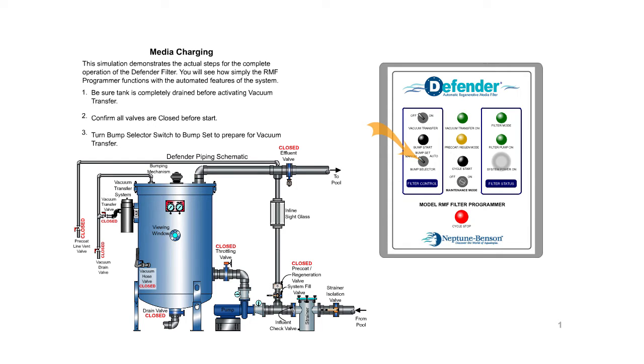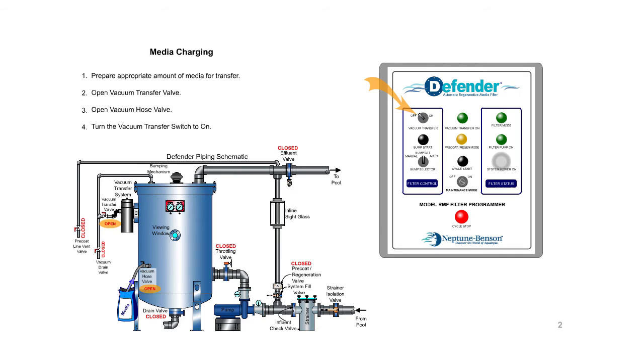Media charging. Be sure tank is completely drained before activating vacuum transfer. Confirm all valves are closed before start. Turn bump selector switch to bump set to prepare for vacuum transfer. Prepare appropriate amount of media for transfer. Open vacuum transfer valve. Open vacuum hose valve. Turn the vacuum transfer switch to on.